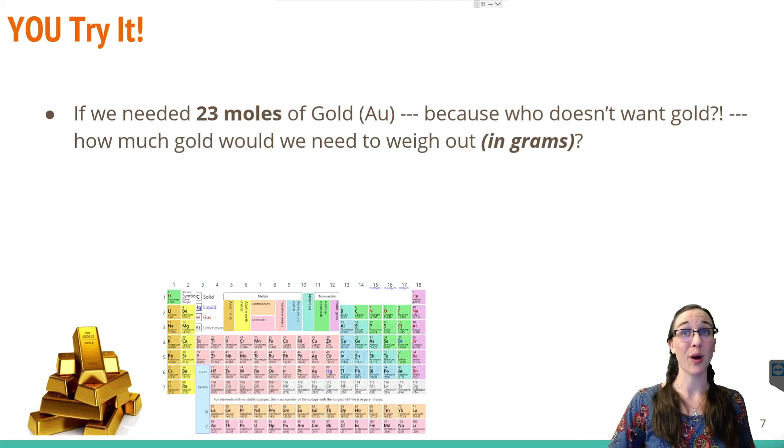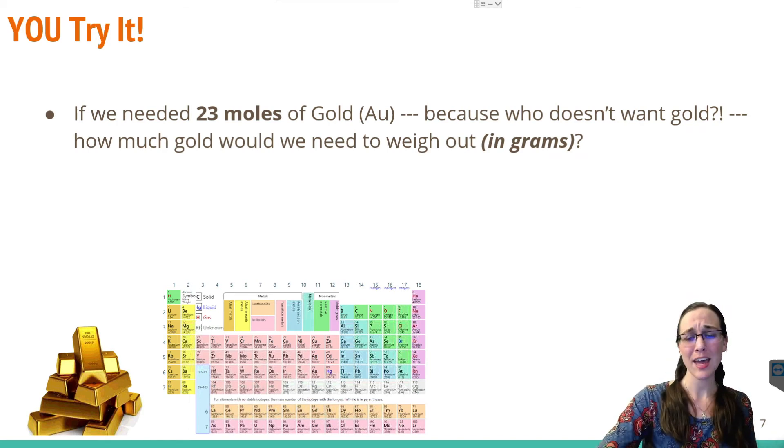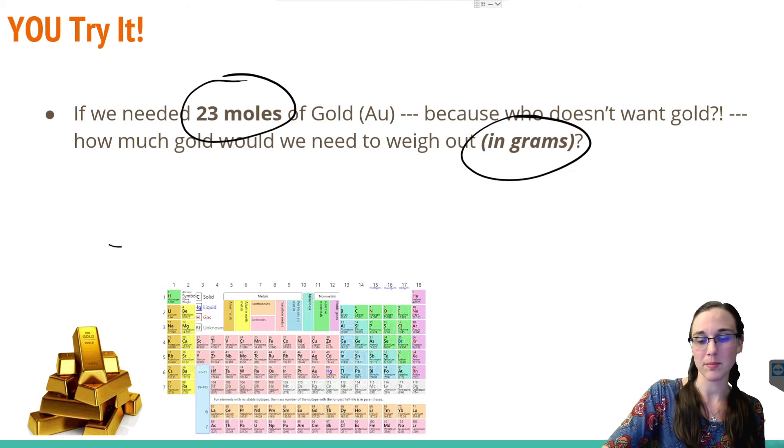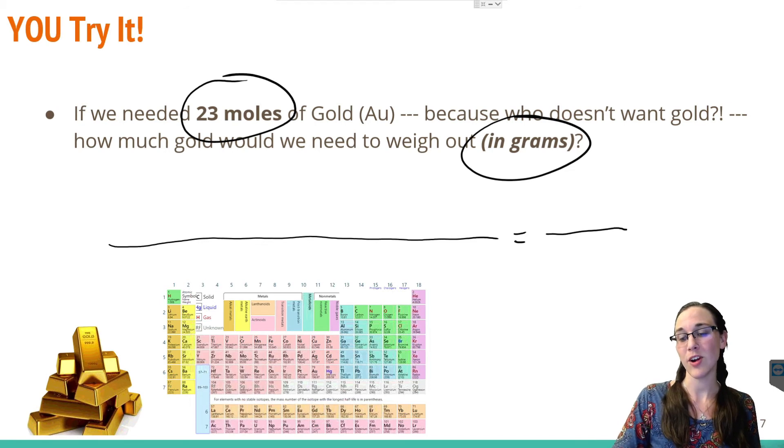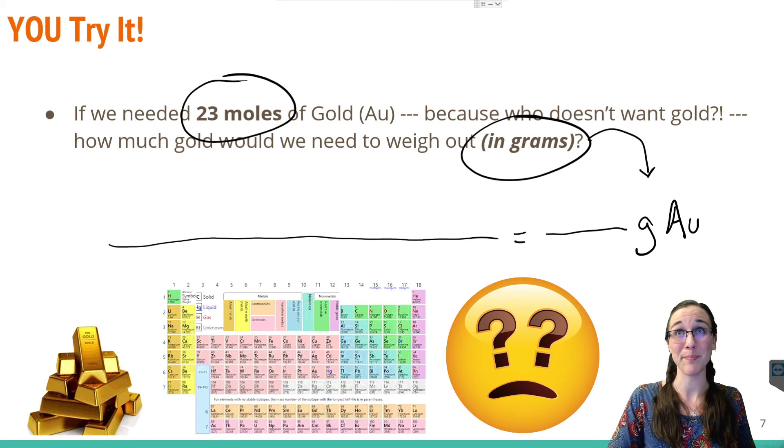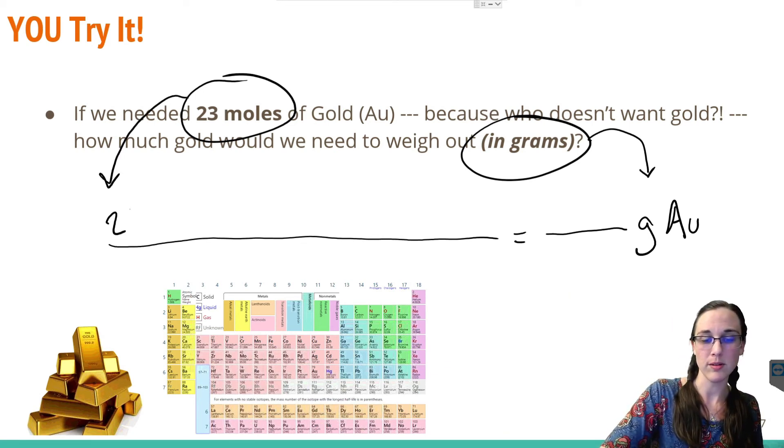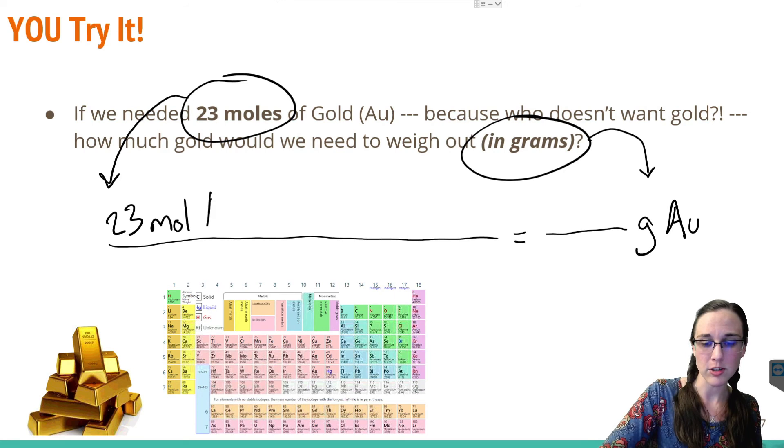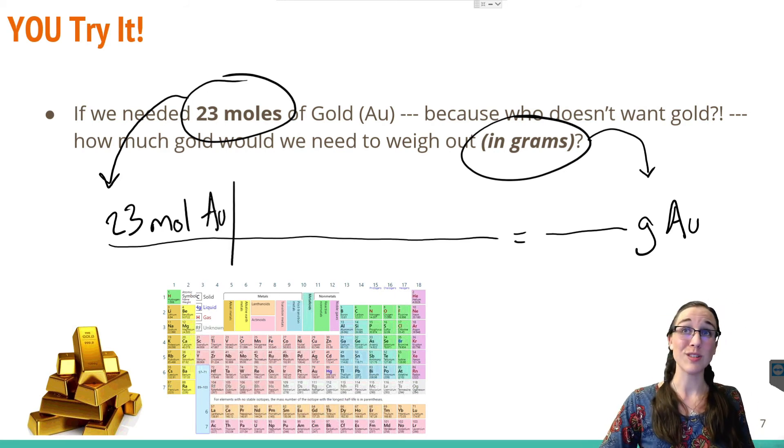This question is asking about gold because who doesn't want more gold? And it's saying, hey, we need 23 moles of gold for whatever reason. And we want to know how much we need to weigh out on a scale if we need 23 moles of gold. So we're going to draw our dimensional analysis line, our magical line to freedom, leave a space for our answer and put our goal units at the end, which happens to be grams and grams of what? Again, grams of grass, grams of pet fur, grams of gold. You need to make sure that you're putting your units throughout all the time. Now we need to take our given, our 23 moles, and put that as the first thing on our line, 23 moles of earwax, 23 moles of gold. So make sure you're still labeling throughout.